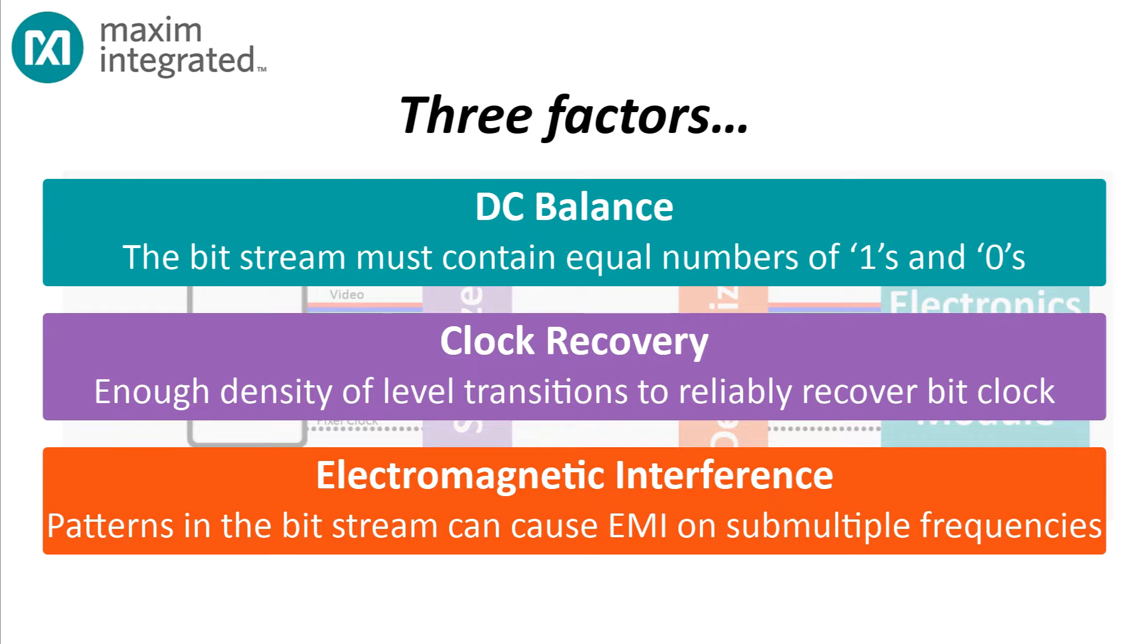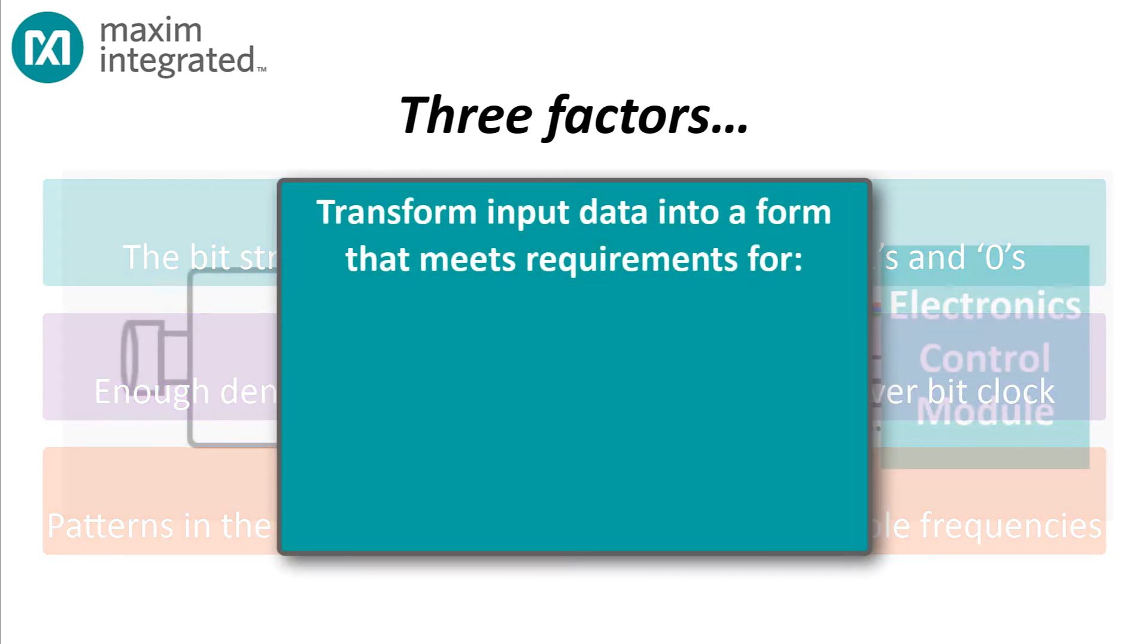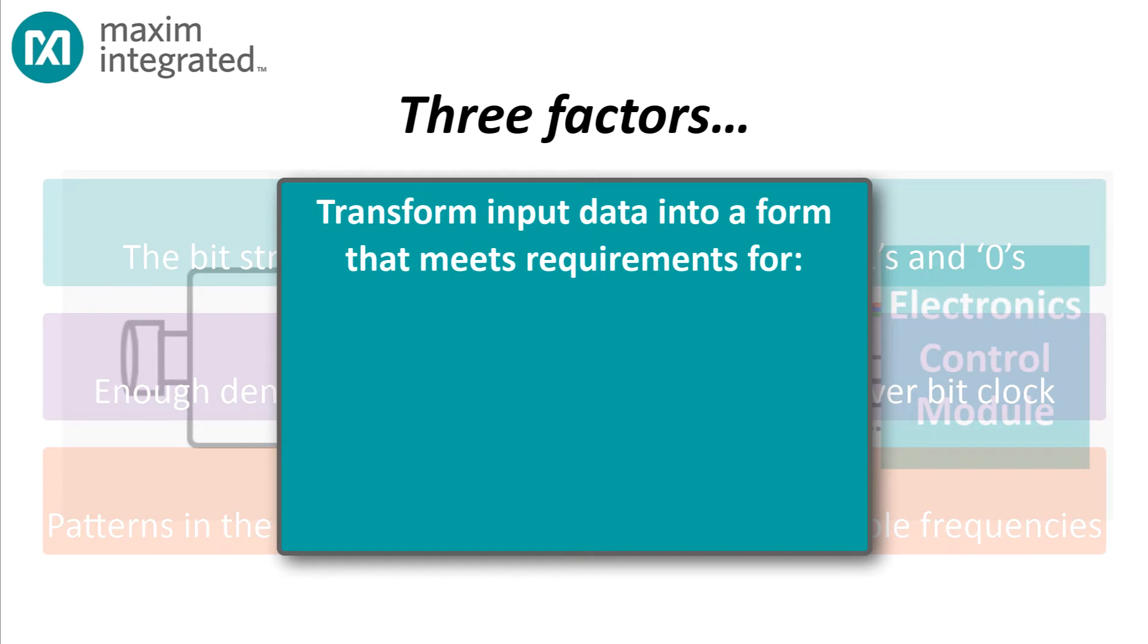To meet these goals, it's necessary to transform what might be unruly input data, like a long string of zero bits that would upset both DC balance and clock recovery, into a form that fulfills disparity, clock recovery, and EMI requirements. But how?